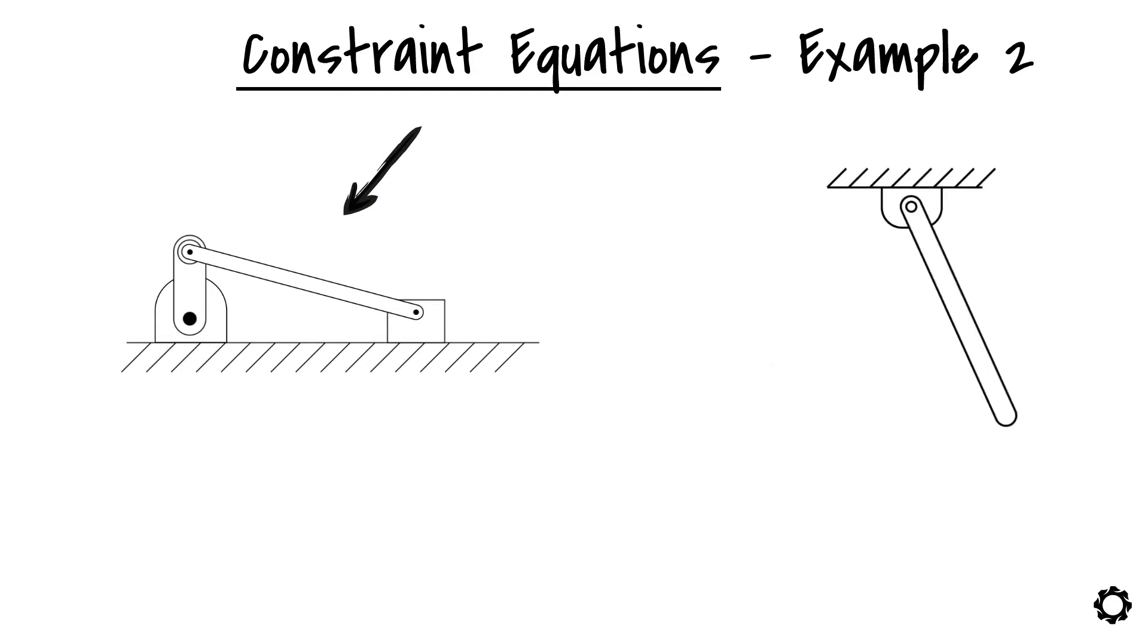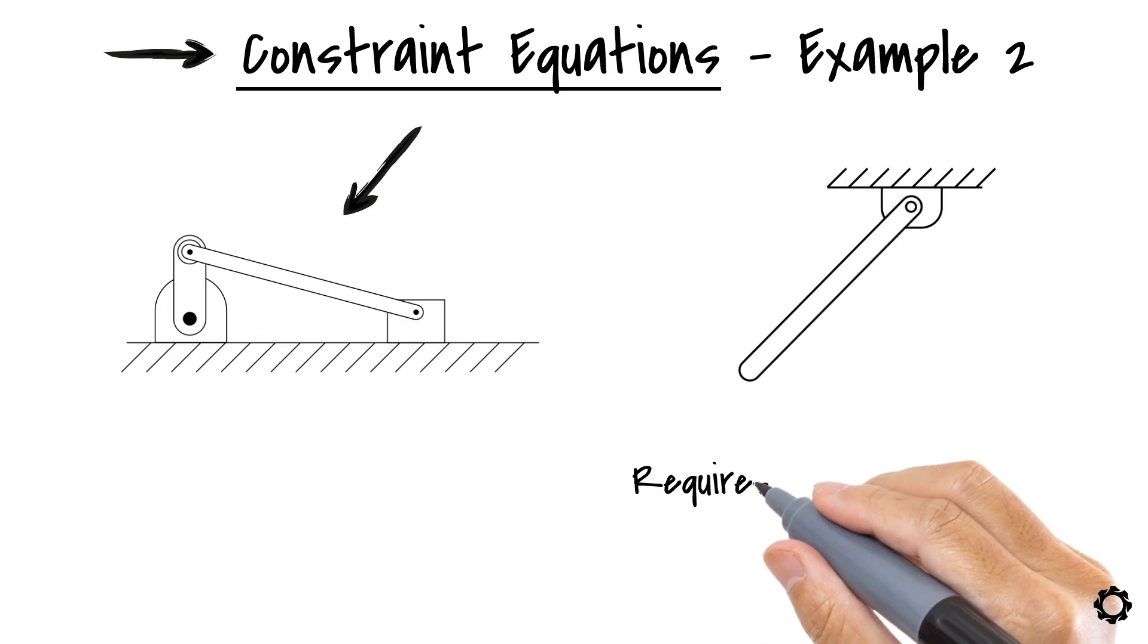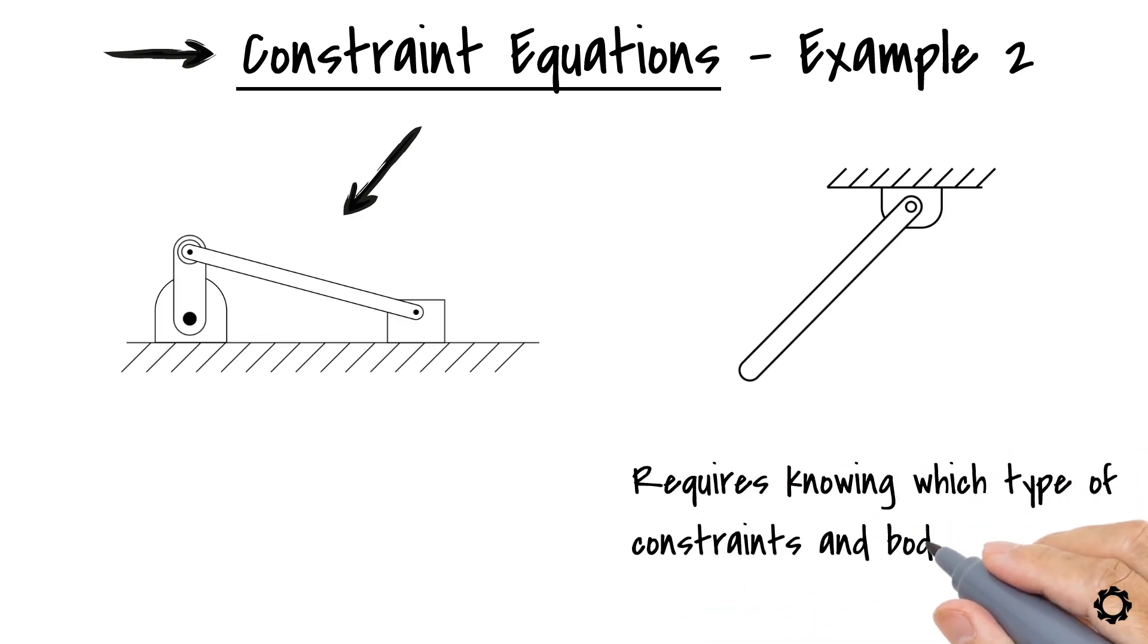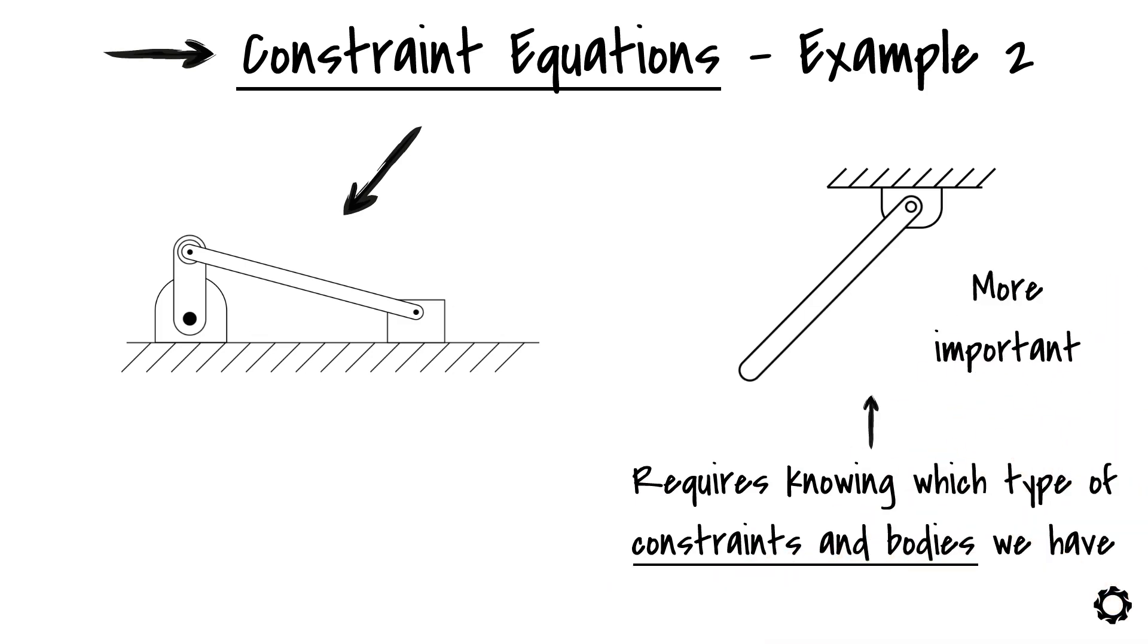As you noticed in our last lesson for the simple pendulum case, deriving the constraint equations requires knowing which type of constraints and bodies we have in our system. Knowing these aspects is even more important than trying to imagine how the system will move or how the relative movement between the bodies is.